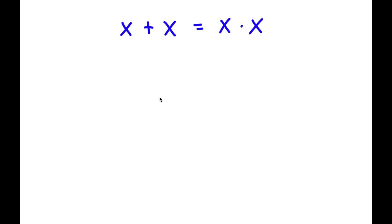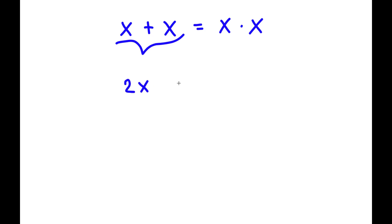So in this problem, I have x plus x is equal to x times x. x plus x is simply equal to 2x, and x times x is equal to x squared. So I have 2x is equal to x squared.